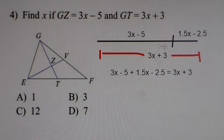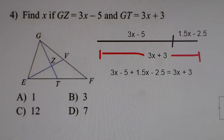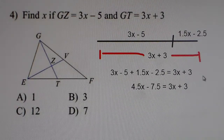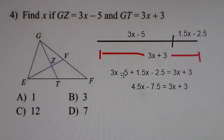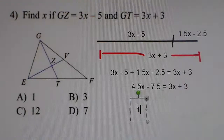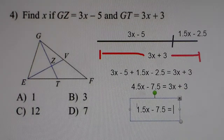This piece plus this piece equals that big piece. Combine like terms: 3x and 1.5x gives 4.5x, and negative 5 minus 2.5 is negative 7.5, equal to 3x plus 3. Subtract 3x from both sides: 1.5x minus 7.5 equals 3.